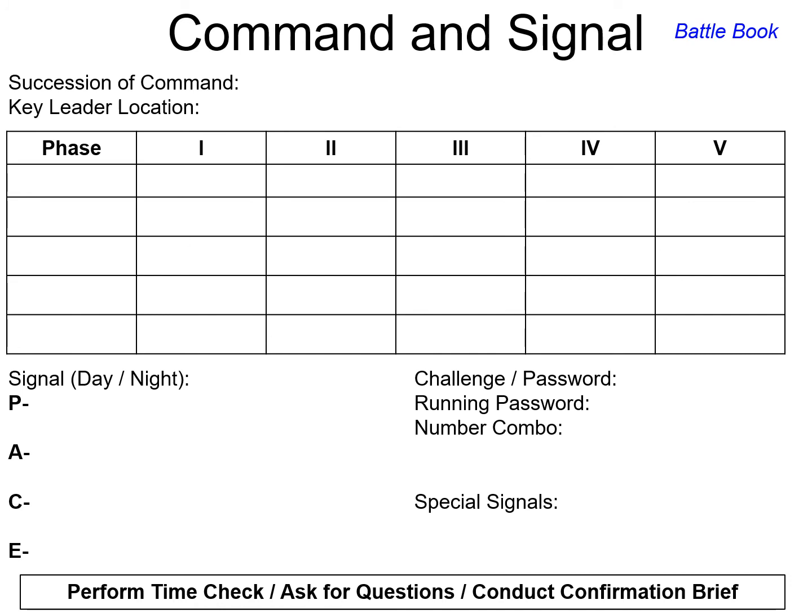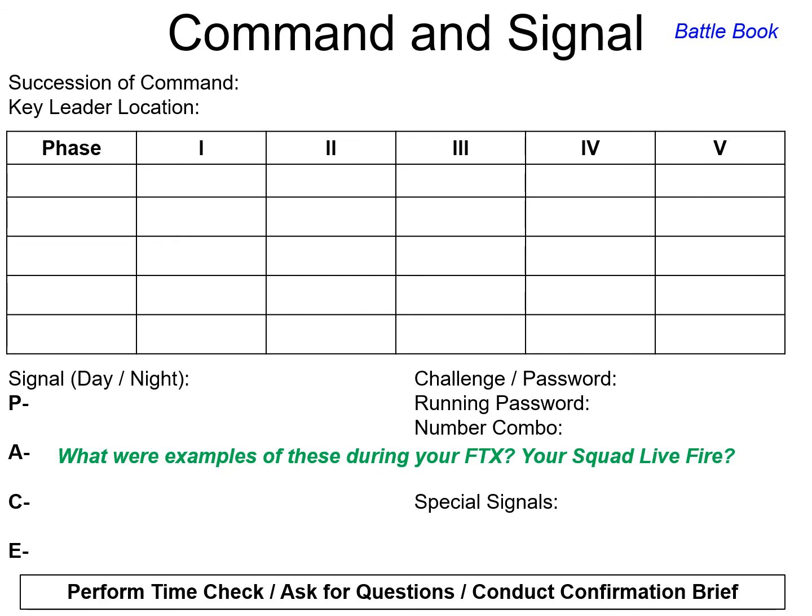Here's the page out of the battle book for the command and signal paragraphs. You can write out your succession of command and order, put your key leader locations into the table by phase, spell out your PACE plan, and then give any passwords or number combinations for challenges. You can also list your special signals — for example, a green star cluster means to initiate the ambush, a red star cluster means medevac requested, and a purple smoke means a breach lane is open, or any other signals needed to complete your mission. Think about examples of these from your FTX, squad live fire, or other field exercises here at West Point — you've probably seen examples of all of this in the past.